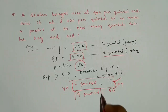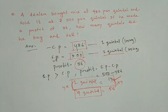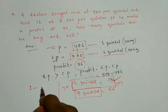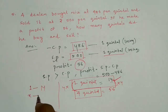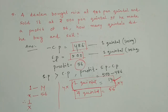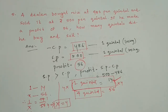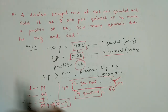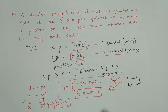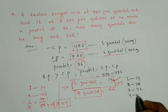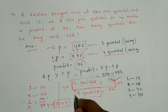To verify using proportion: 1 quintal gives 14 rupees profit, so x quintals give 56 rupees. Setting up: 1/x = 14/56 = 1/4, so x = 4. Alternatively: 1 quintal → 14, 2 quintals → 28, 3 quintals → 42, 4 quintals → 56 rupees. So my answer is 4 quintals.